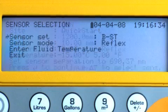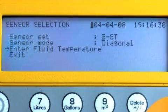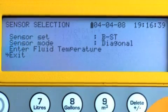For diagonal mode operation, press scroll and select sensor mode. Press enter and select diagonal mode. Scroll down to exit and press enter.